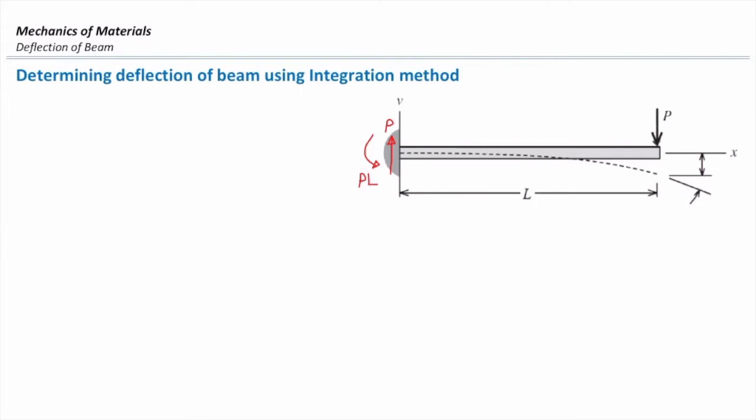The axial reaction in the X direction would be zero because there is no force in that direction. And the moment would be simply P times R, which in this case is L. So the moment at the left end would be PL. These are the reaction forces.